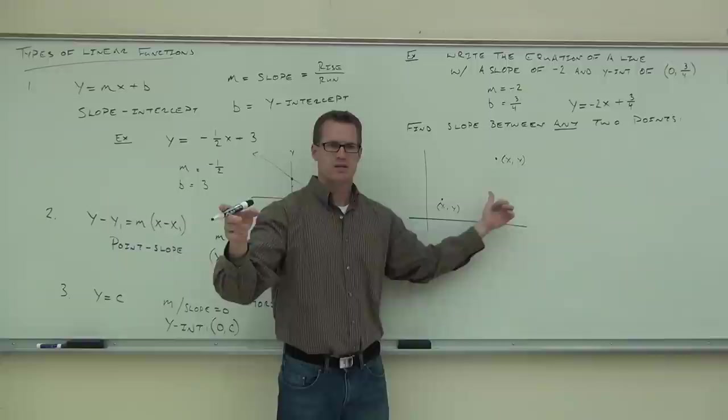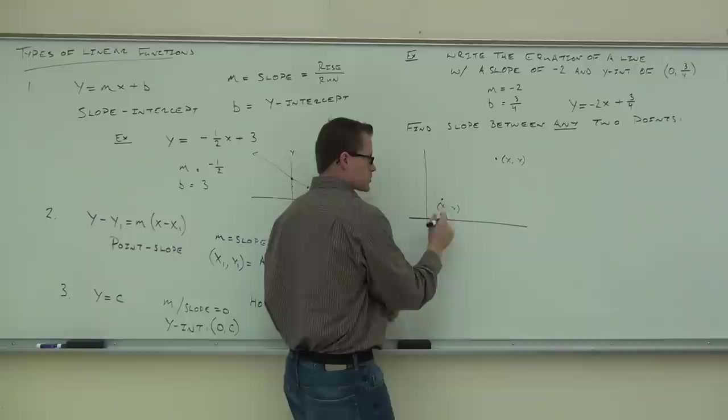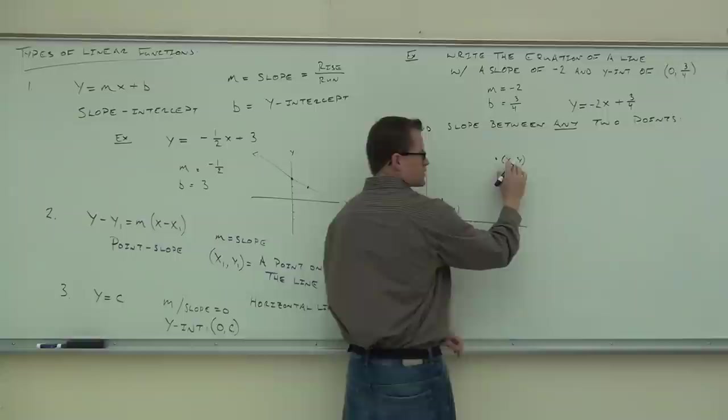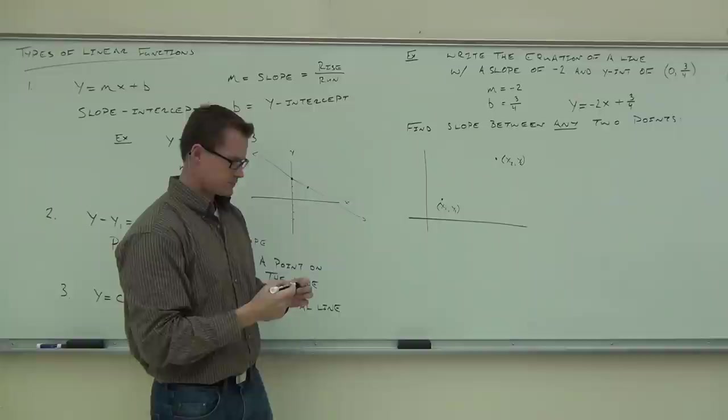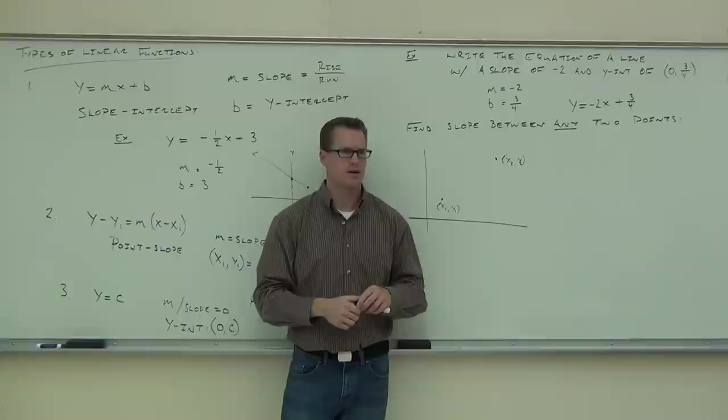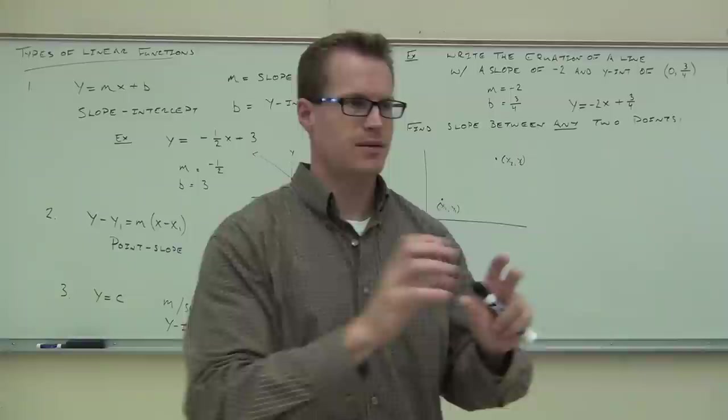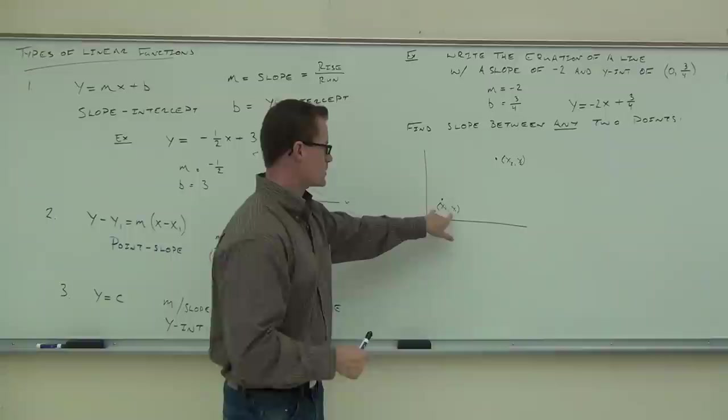We're going to use a subscript, just like we have in the point-slope form. We're going to say this is the first point: x1, y1. And this will be the second point: x2, y2. Notice how the ones have to go together and the twos have to go together — it's the first point and the second point. Now what we do for our slope is we look for our rise and our run. Rise goes here: we're looking at how much this line gains in altitude between this point and that point. That's going to be our rise from here to here.